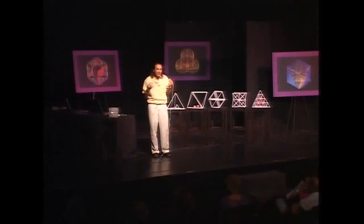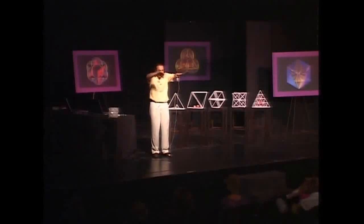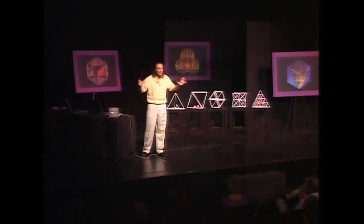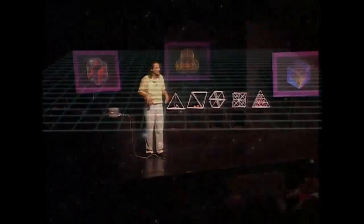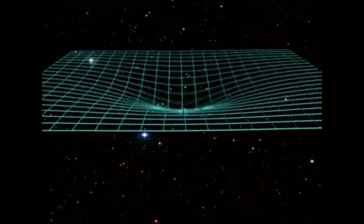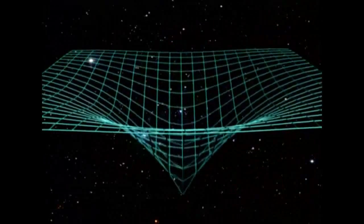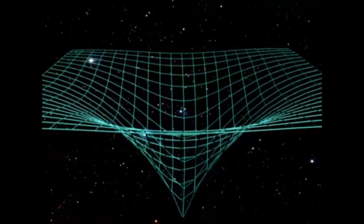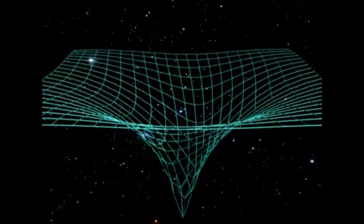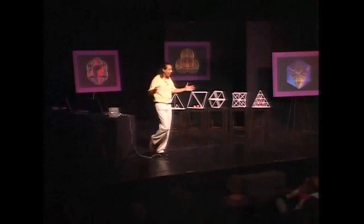Let's go back to the analogy of Einstein's field equation of the trampoline curving to generate gravity. Einstein said gravity is the result of space-time curving like the surface of a trampoline. What we say in this paper is that yes, and when space-time curves, it doesn't just curve — but it curls, just like water going down the drain, and that generates spin, angular momentum. And that's the source of the spin of all things.